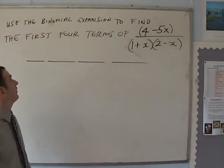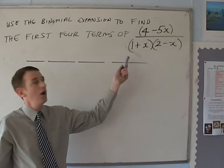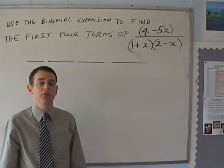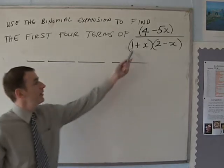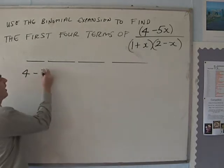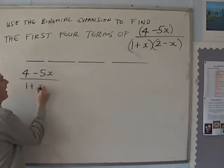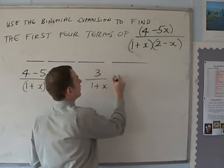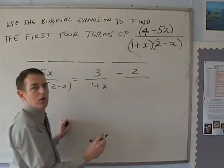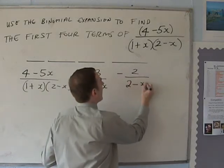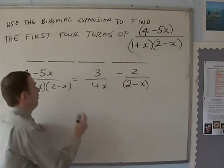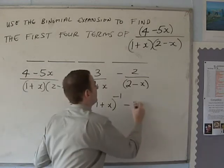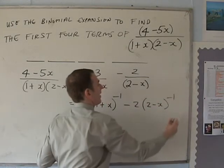Use the binomial expansion to find the first four terms of (4 − 5x)/((1 + x)(2 − x)). The first thing we recognise is that this needs to be split up using partial fractions. Solving using partial fractions in the normal way, we get (4 − 5x)/((1 + x)(2 − x)) = 3/(1 + x) − 2/(2 − x). So this equals 3 × (1 + x)^(−1) minus 2 × (2 − x)^(−1). We now need to expand both of these.